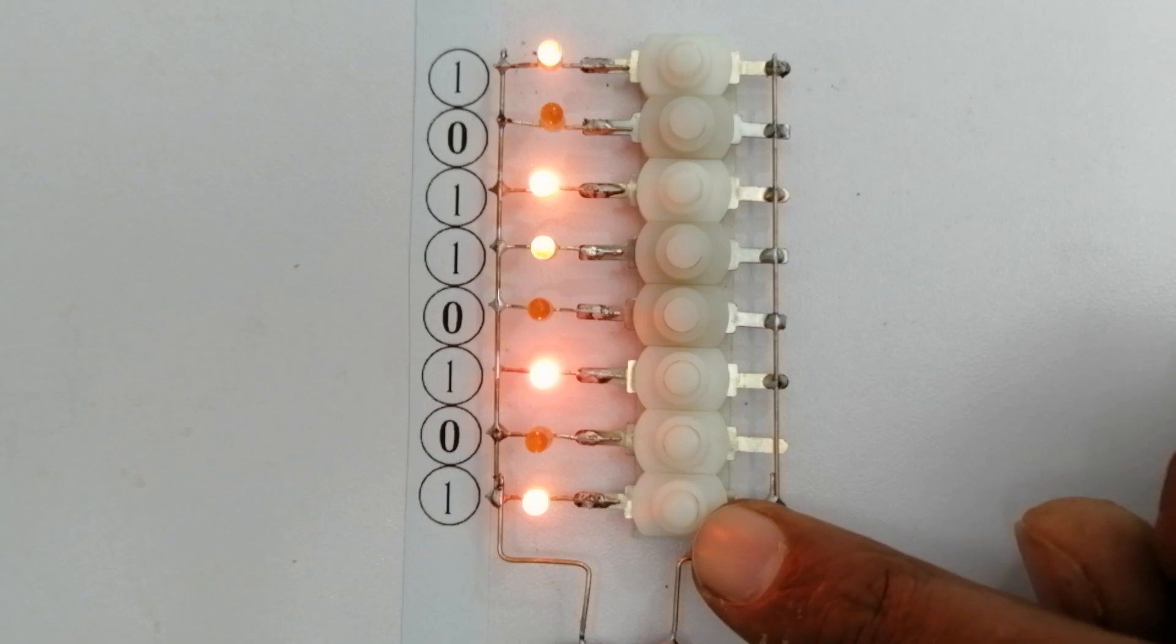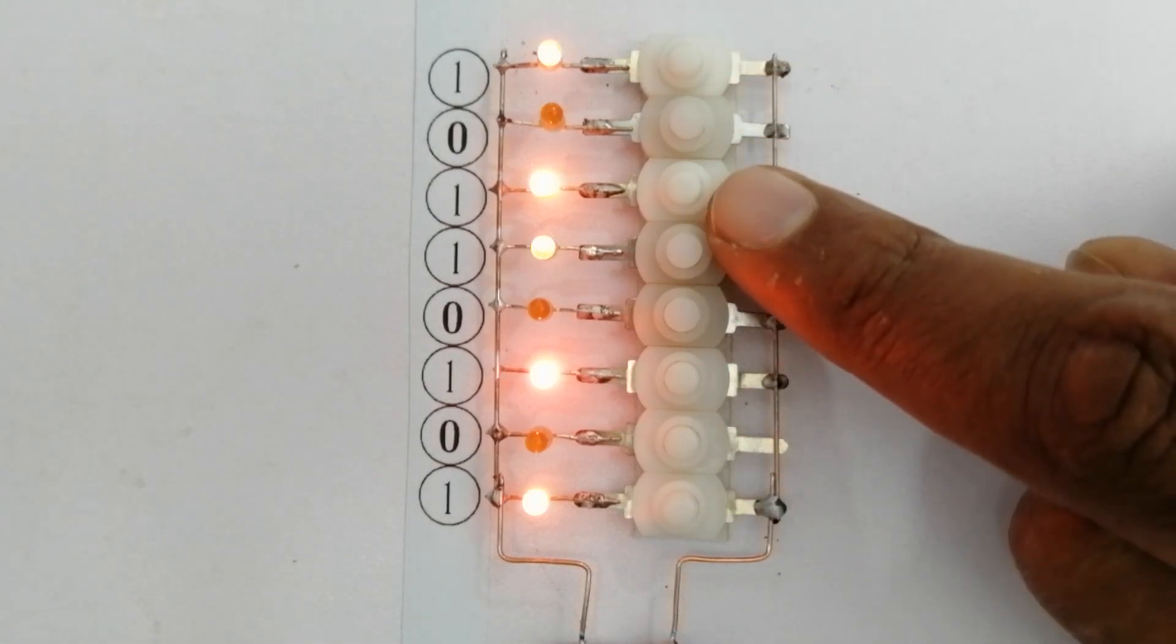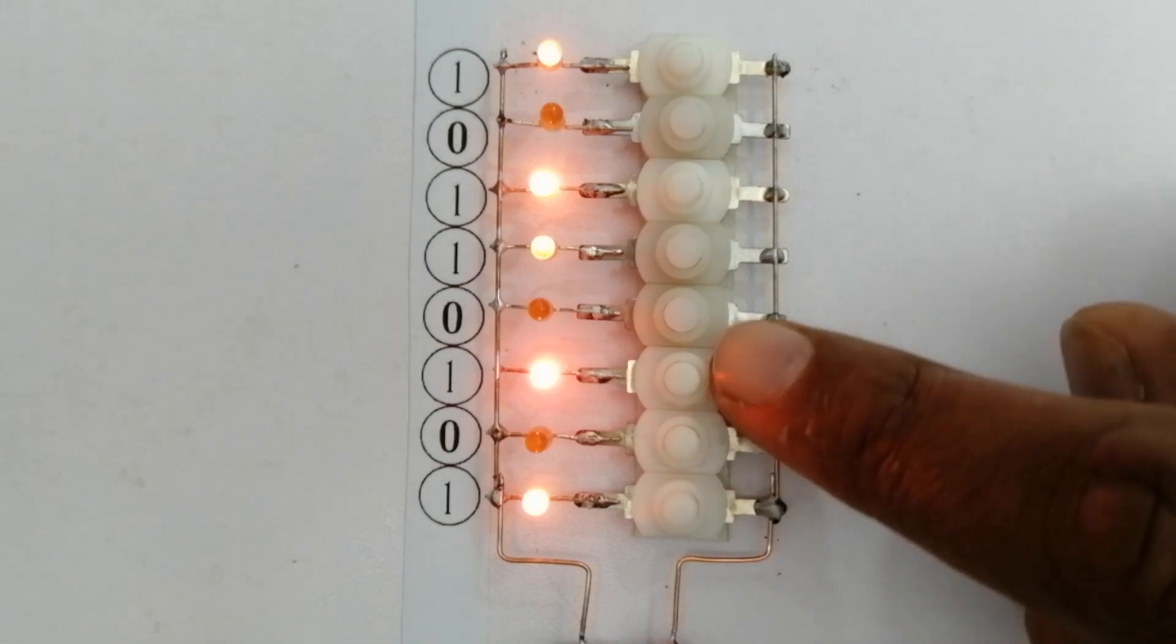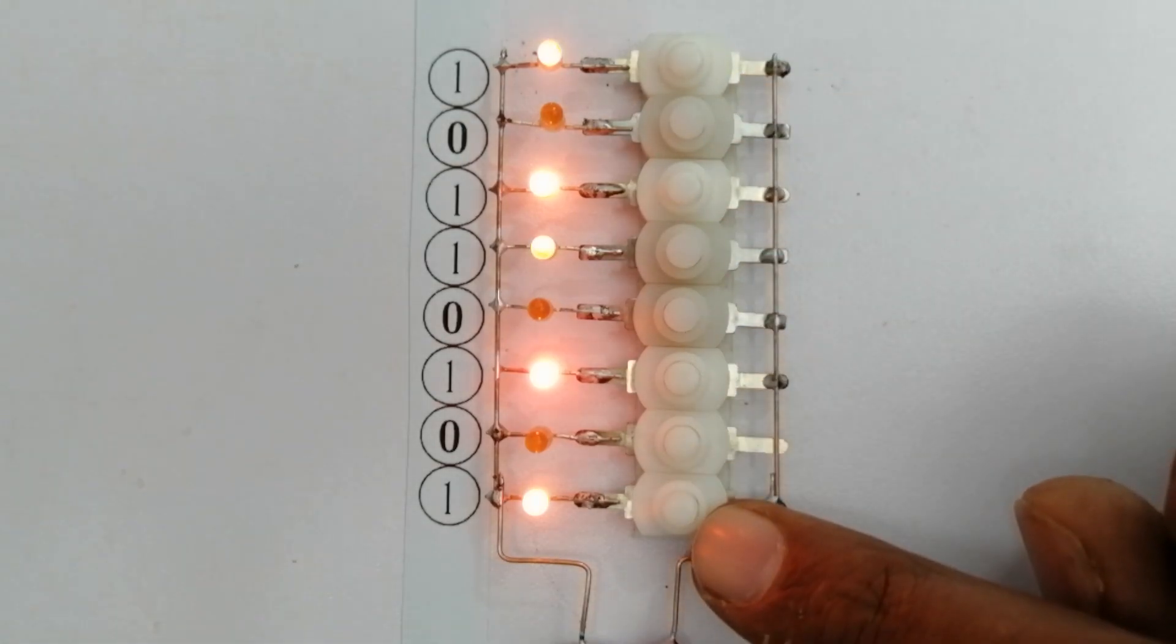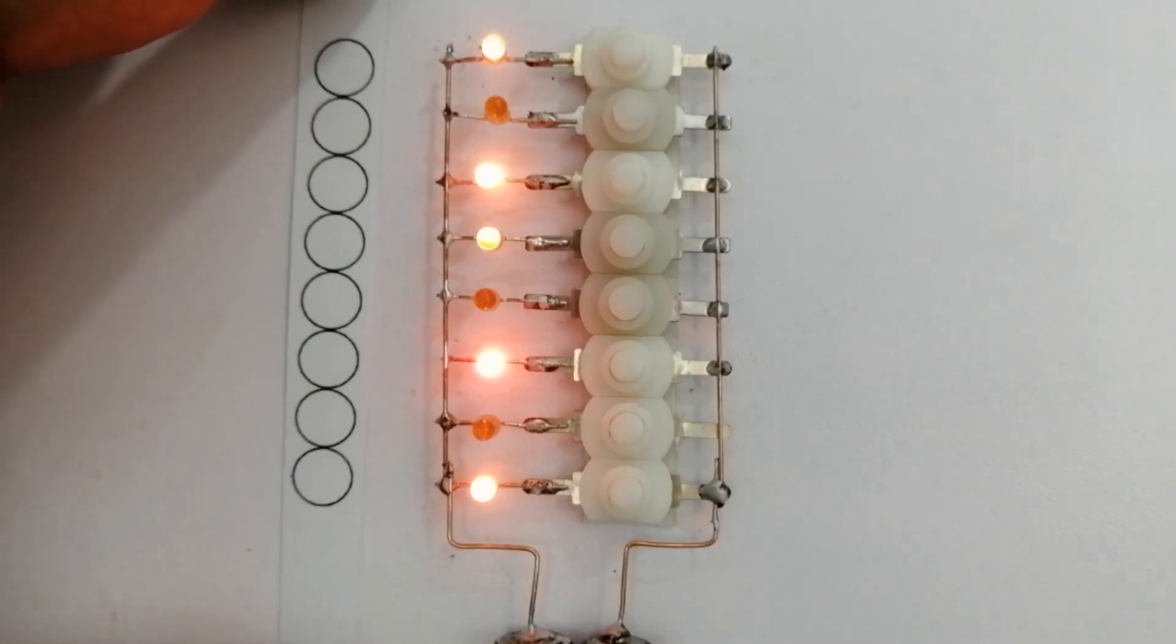Some switches are on and some are off. We will consider 1 for switches that are on. We will consider 0 for switches that are off. In the same way we can write and read data. Viewers, our data is available on this little RAM. So let's read this data.